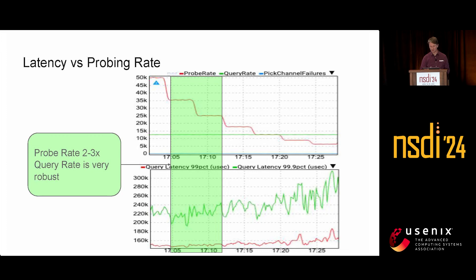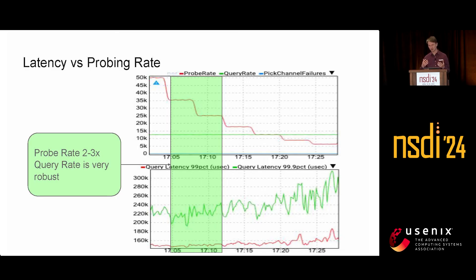You might wonder how many probes we should be sending. We ran many experiments to investigate a good probe rate. It turns out that sending two or three probes per query is very robust across many different use cases. Varying the probe rate shows that latency stabilizes at a low value at two or three probes per query.